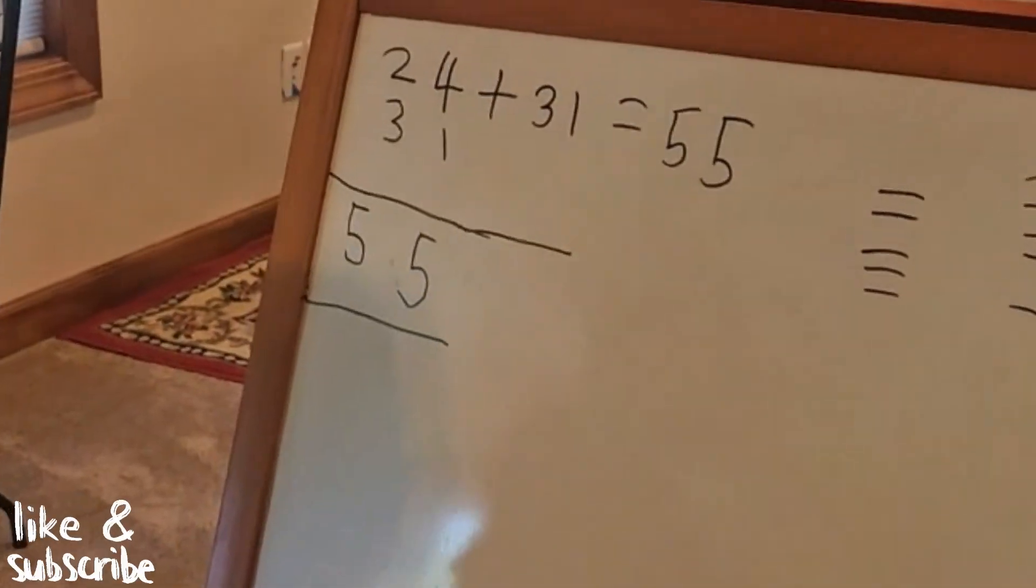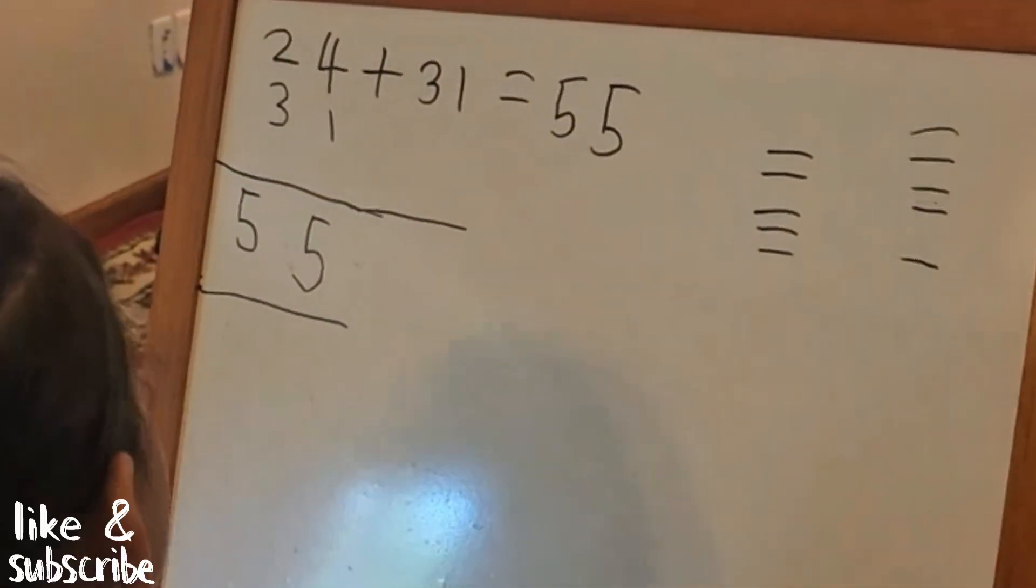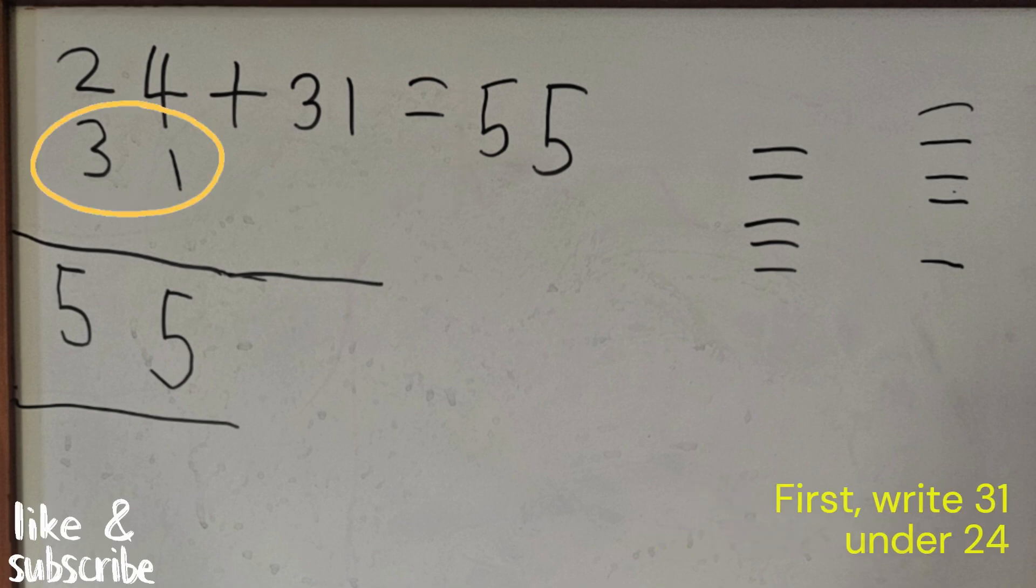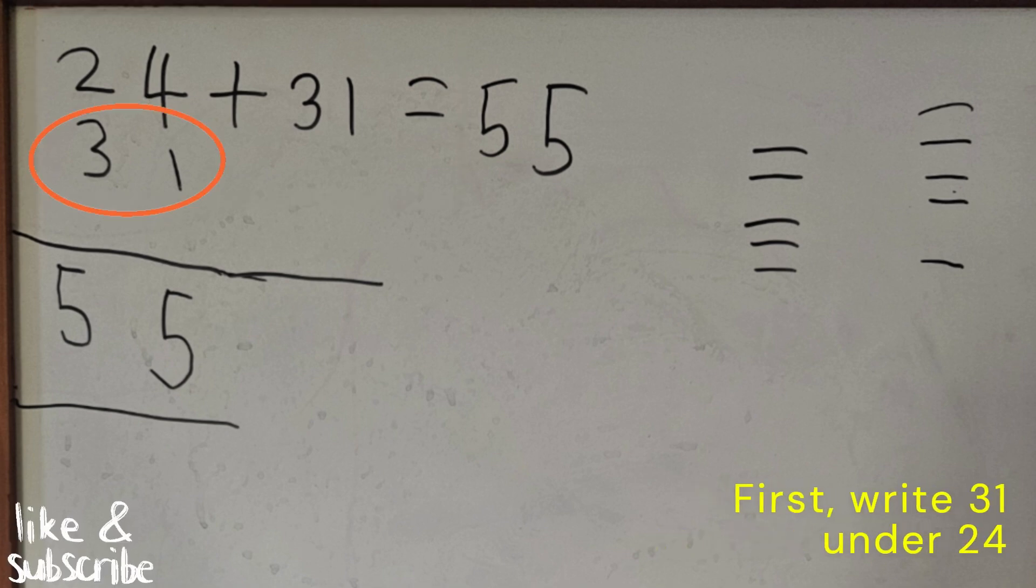Sasha, can you explain how you did the addition one more time? Okay. We are going to add 24 plus 31. First, you write 31 under 24.